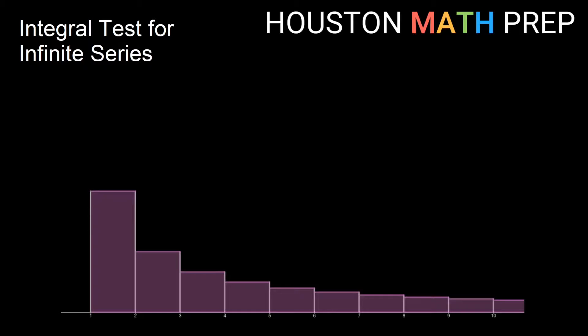If I draw a function through the top left corners of my rectangles, this starts to look like something we might have seen when developing integrals, right? This is what you probably would have called a left-hand sum. Because this function I'm showing here is decreasing, you can see that a left-hand sum obviously is going to overestimate the area under my function.